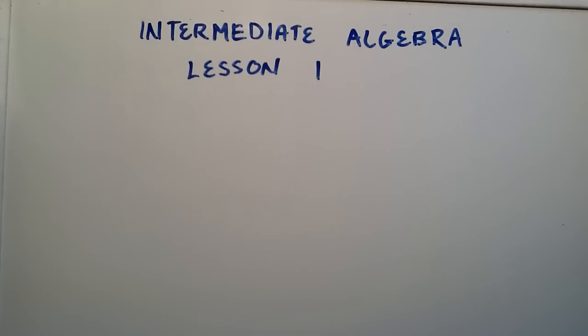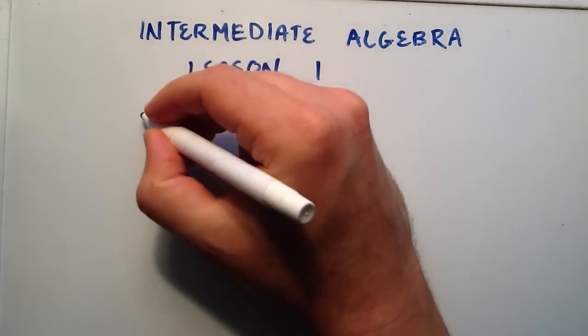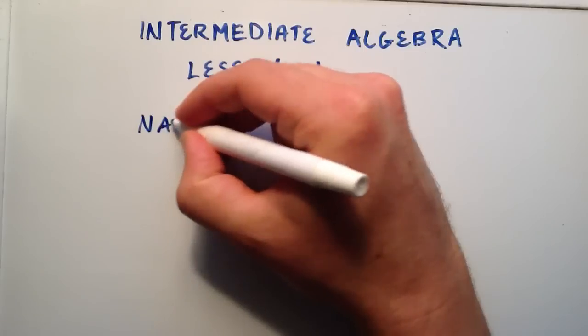So anyway, let's go ahead and get started with the very first lesson. It'll be pretty simple, but it's important. And it's basically, we're going to talk about three different types of numbers.